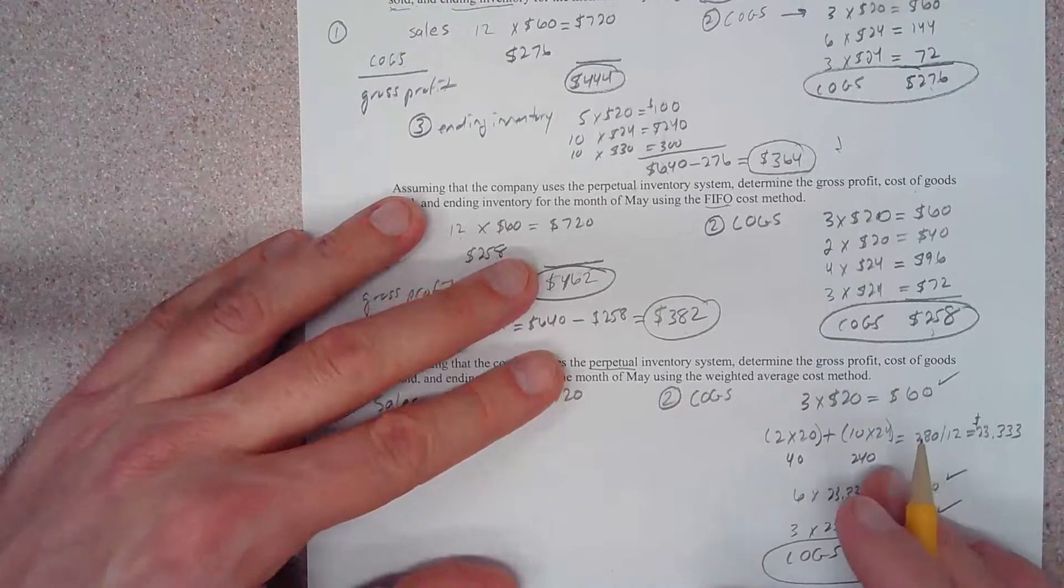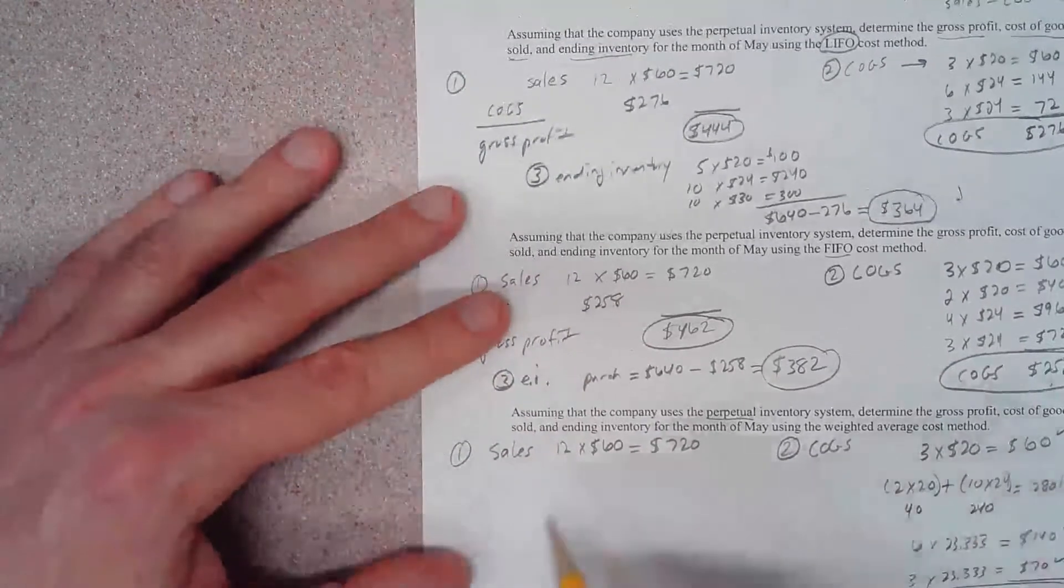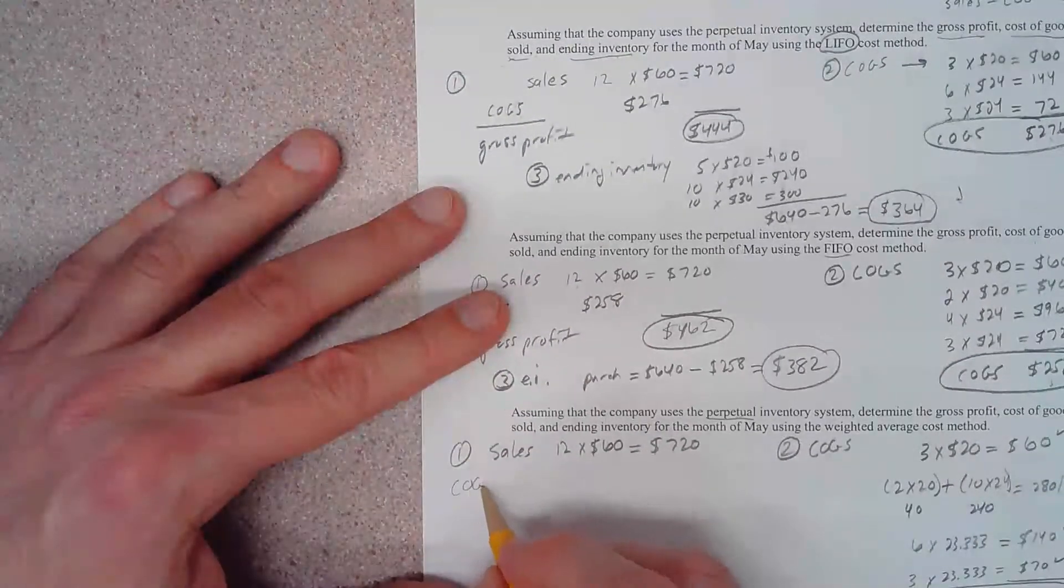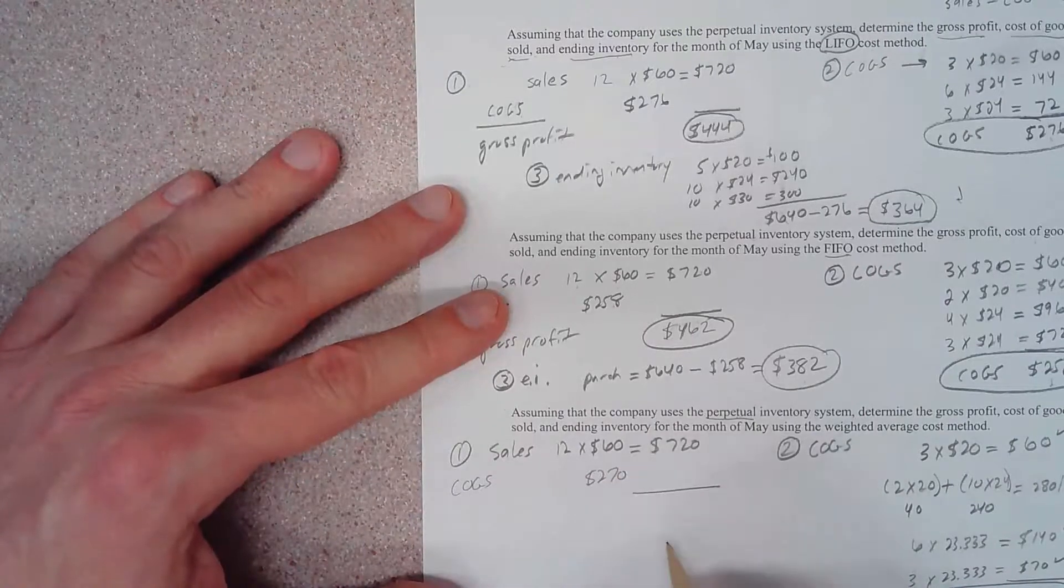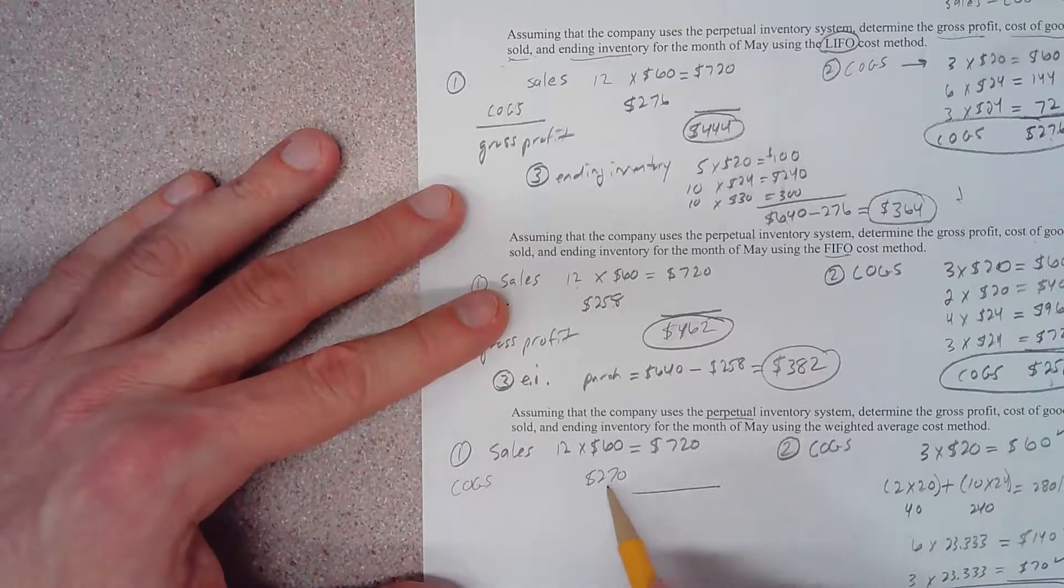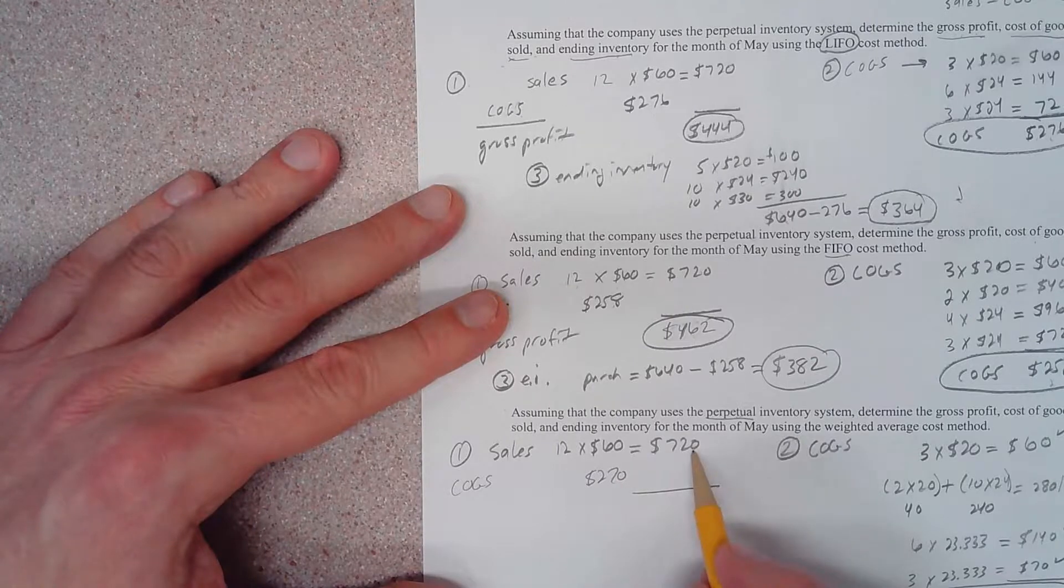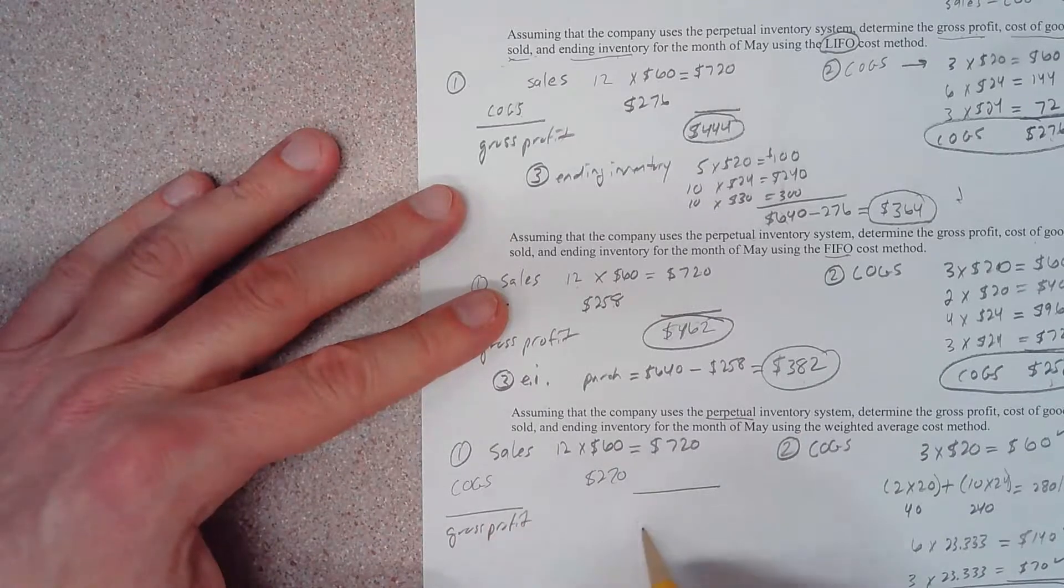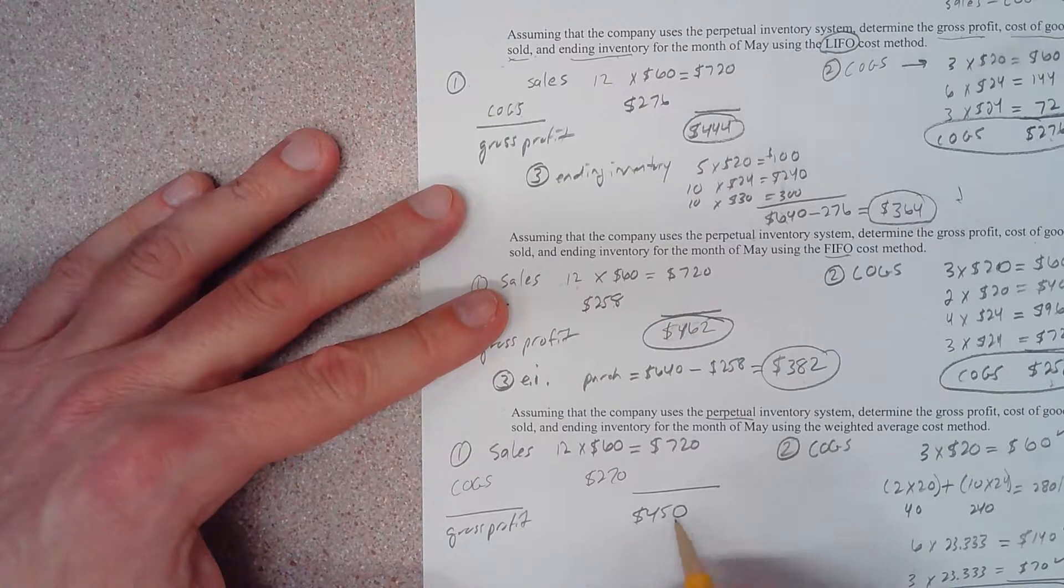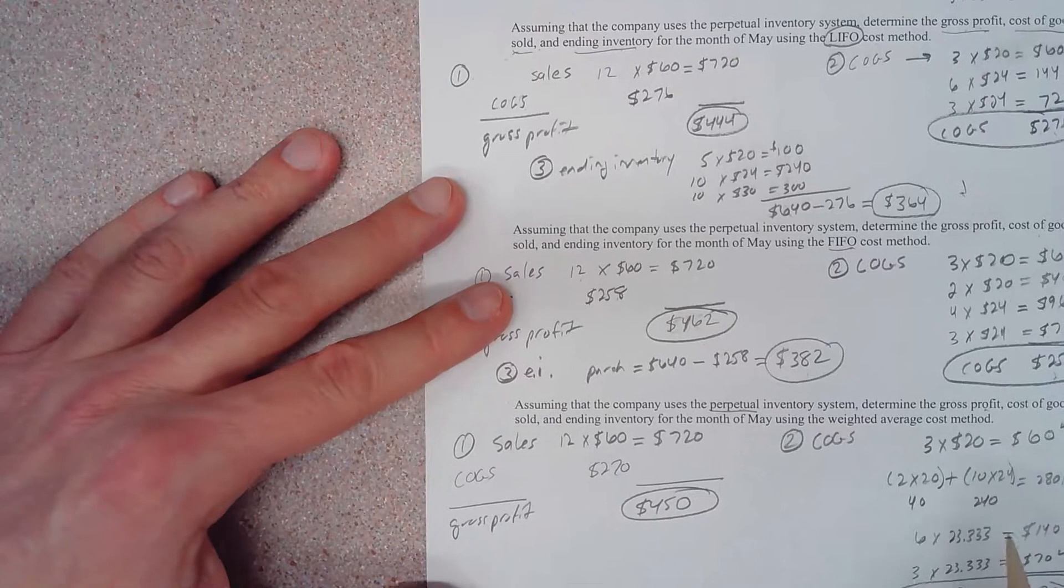That is our answer. Now we're going to subtract our $270 cost of goods sold from our $720 in sales. If we do that, we come up with gross profit of $450, and that's one of the answers we've been asked to calculate.